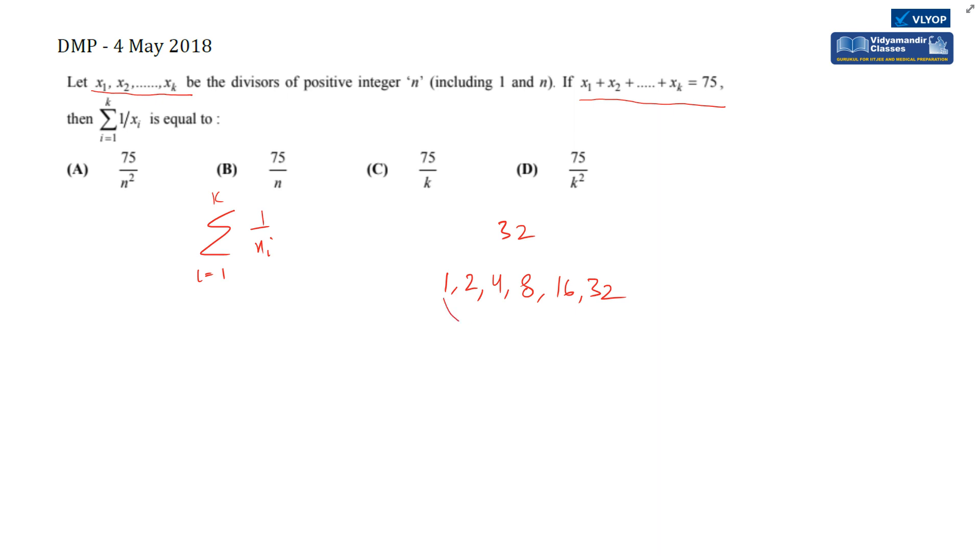First divisor and last: 1 × 32 = 32, which is the same as the number. Second and second-last: 2 × 16 = 32, again the number. Third: 4 × 8 = 32.